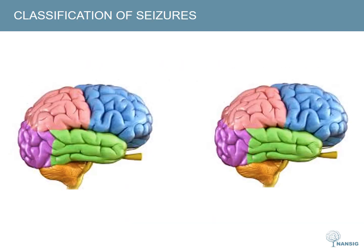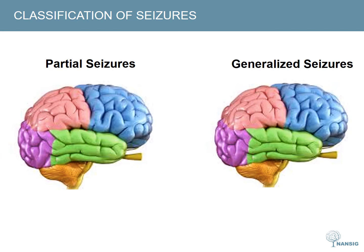Next we're going to talk about the classification of seizures. This is often something that students find challenging so I've tried to break it down for you. Seizures can be characterised as being partial or generalised. Partial seizures originate from one specific location in the brain and have varying severities. With regards to location, they are often described depending on which lobe they originate from.